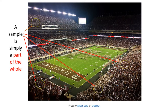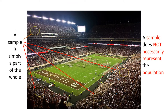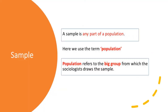It could be a small group on the left, on the right, or on the opposite side — just to help you understand that the sample is simply a part of the whole. A sample, therefore, is simply a part of the whole. Any sample does not necessarily represent the population. In other words, any group of people taken at random from this stadium will not necessarily represent the population. To be more precise, a sample is any part of a population.